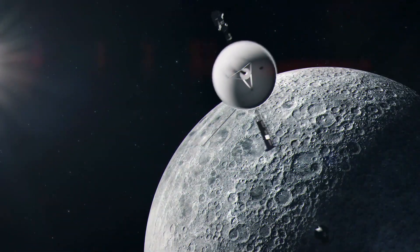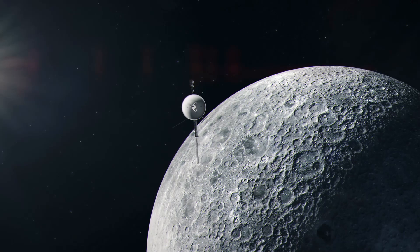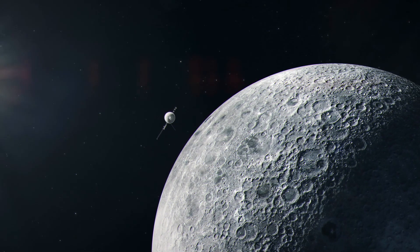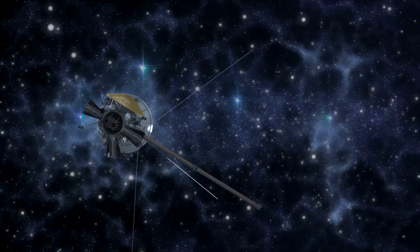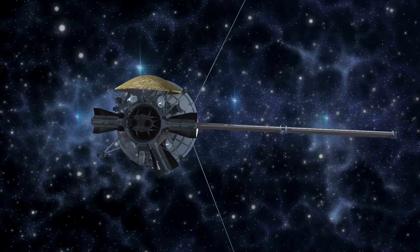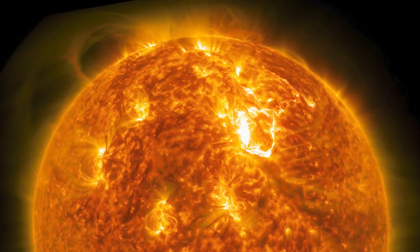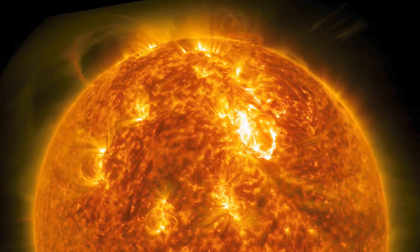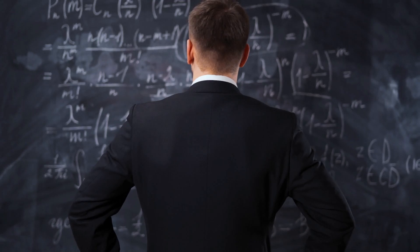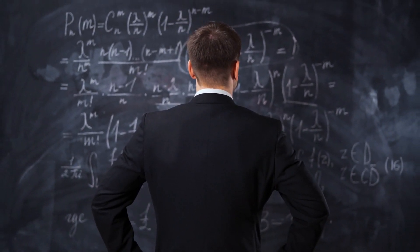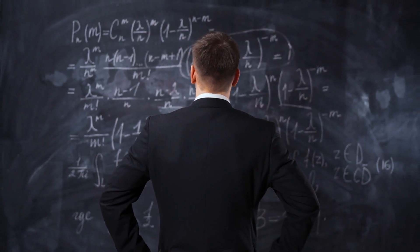Voyager 1 found what scientists call a magnetic highway at the very edge of our solar system. This area is where the sun's magnetic field lines meet those in interstellar space, allowing particles to join and leave our solar system. Scientists have had to rethink how cosmic and solar particles interact with the edges of our solar system just because of this finding.